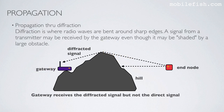You also have propagation through diffraction. Diffraction is where radio waves are bent around sharp edges. A signal from a transmitter may be received by the gateway even though it may be shaded by a large obstacle. In this example, the gateway receives the diffracted signal but not the direct signal.